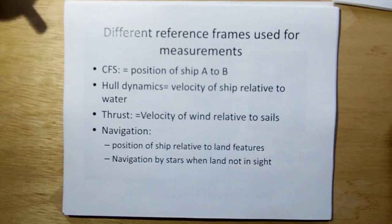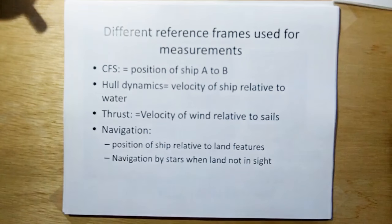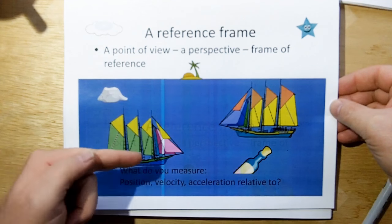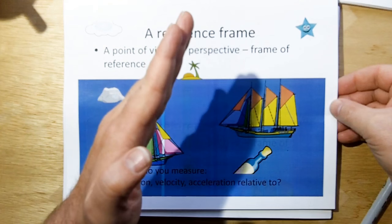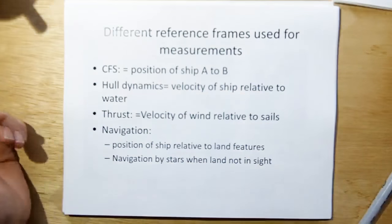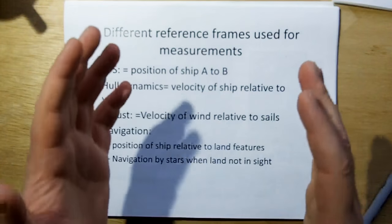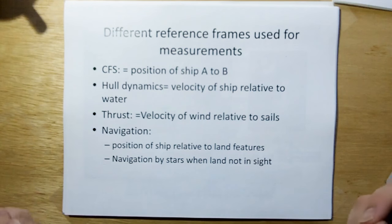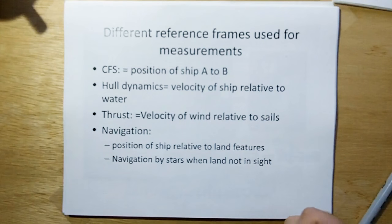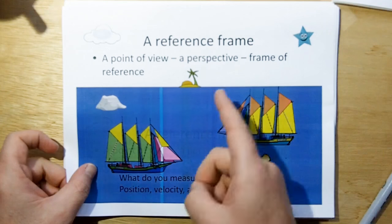Velocity is a relative measurement — it's always measured relative to something else. Acceleration too, for the most part. Consider a cannonball firing solution: one ship is going to fire its cannons at another. You measure the position of A relative to ship B. The captain says the other ship is three points off the port bow, and the gun deck knows which direction to turn the cannons. That's a frame of reference. Hull dynamics — how your hull reacts with the water, viscosity, and the Bernoulli effect — you measure the velocity of the ship relative to the water.